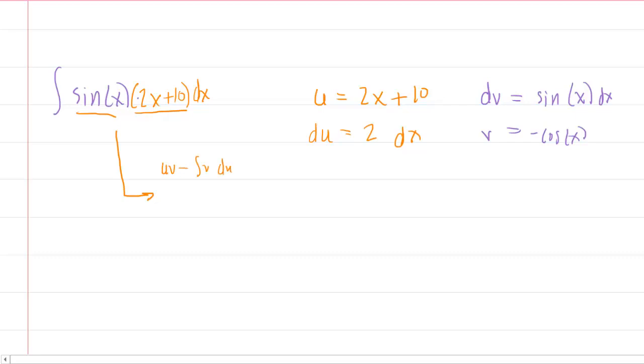So here we go, we have u, which was 2x + 10, multiplied by v, which was negative cosine of x. I'm going to put the negative in front here just because it looks a little tidier, minus the integral of v again, so negative cosine of x, and then times your du, which was the 2 dx.